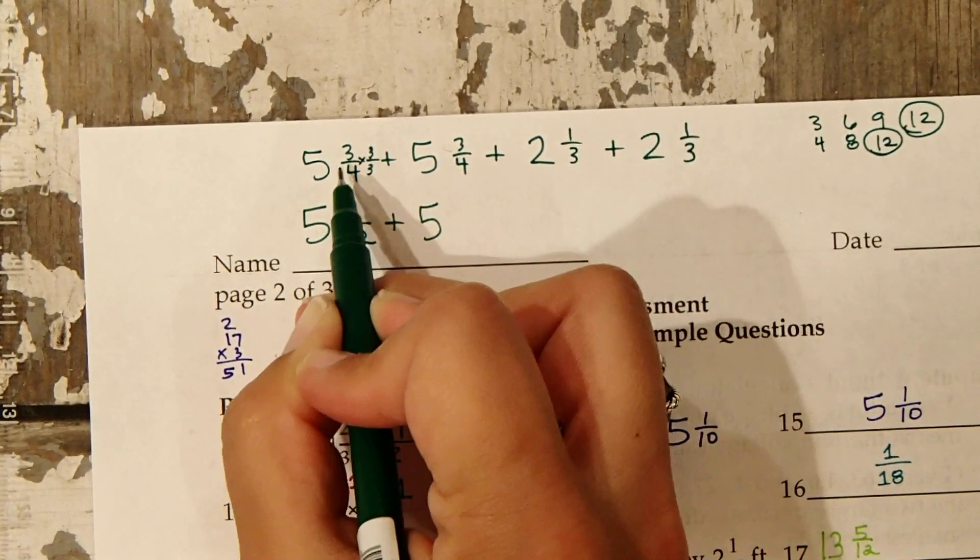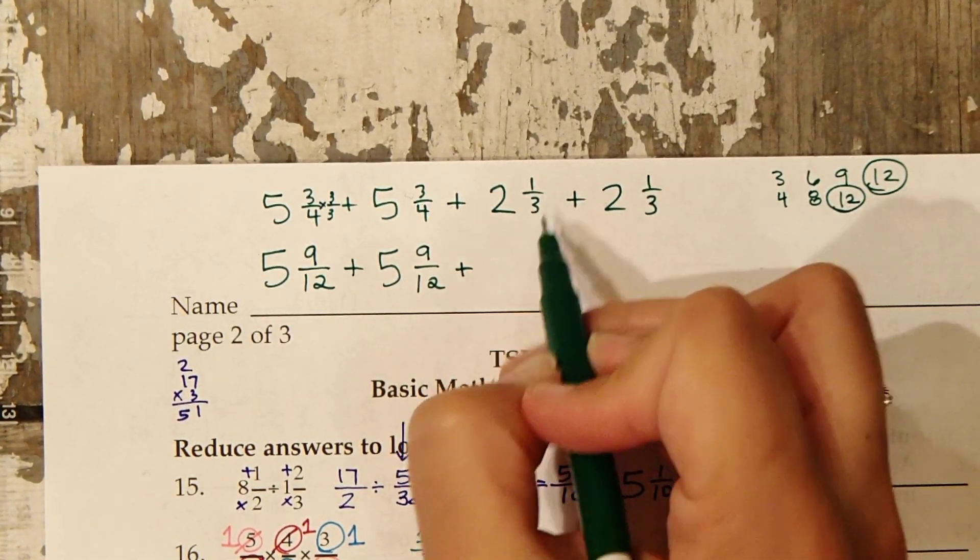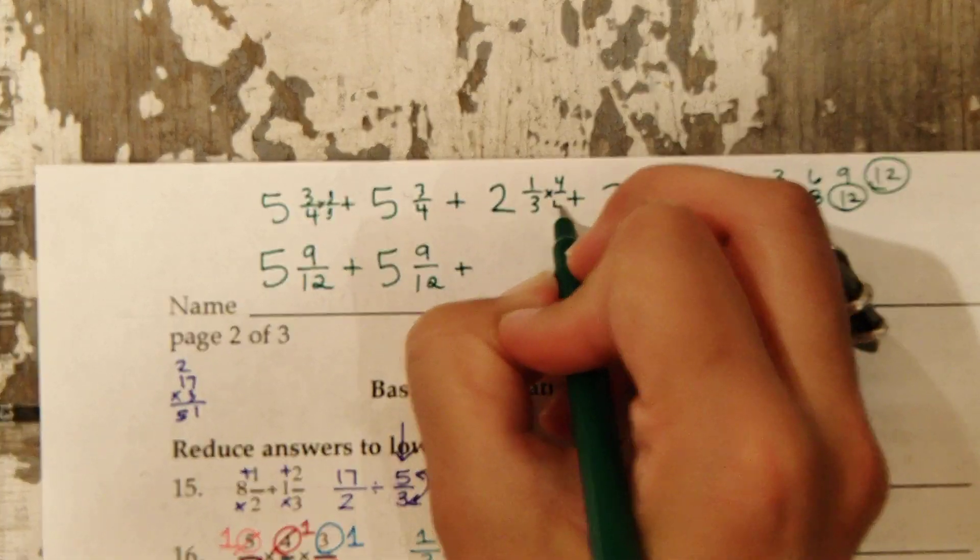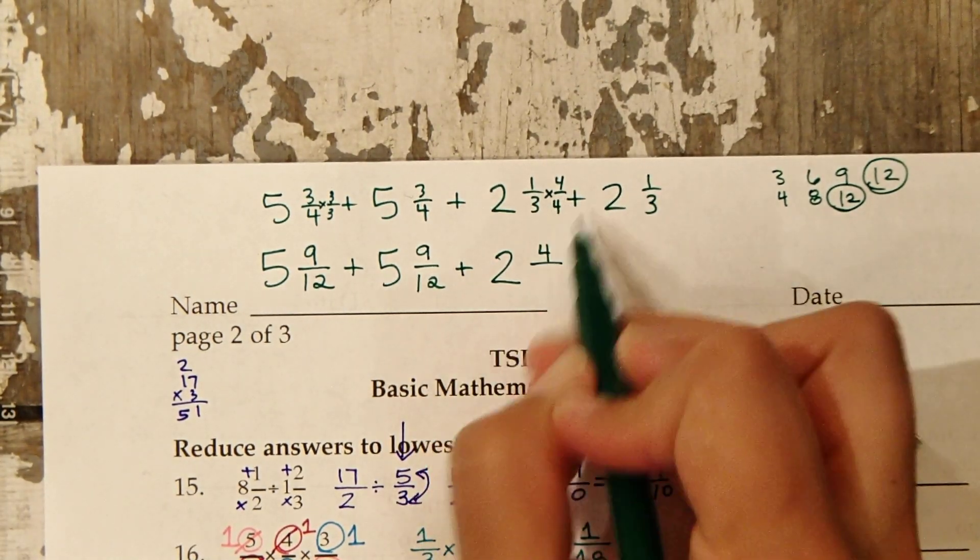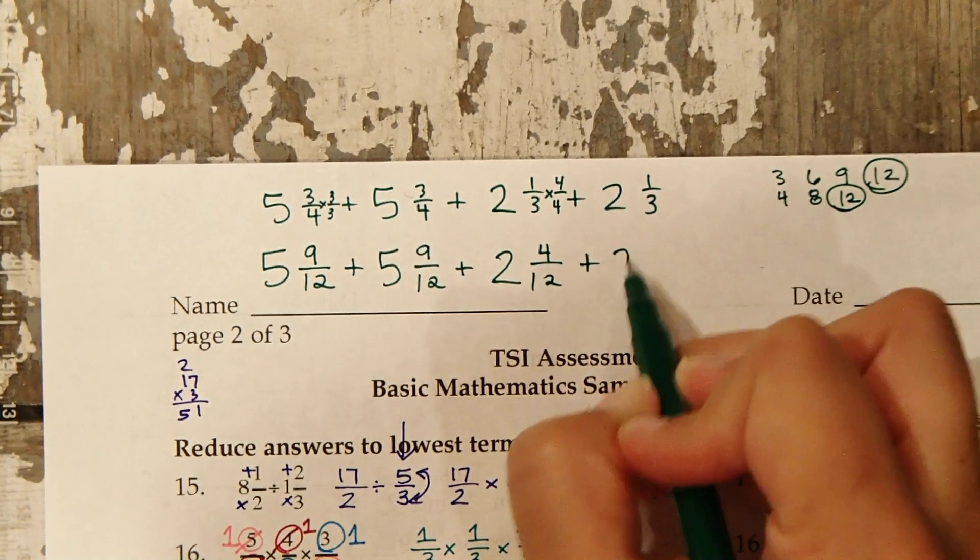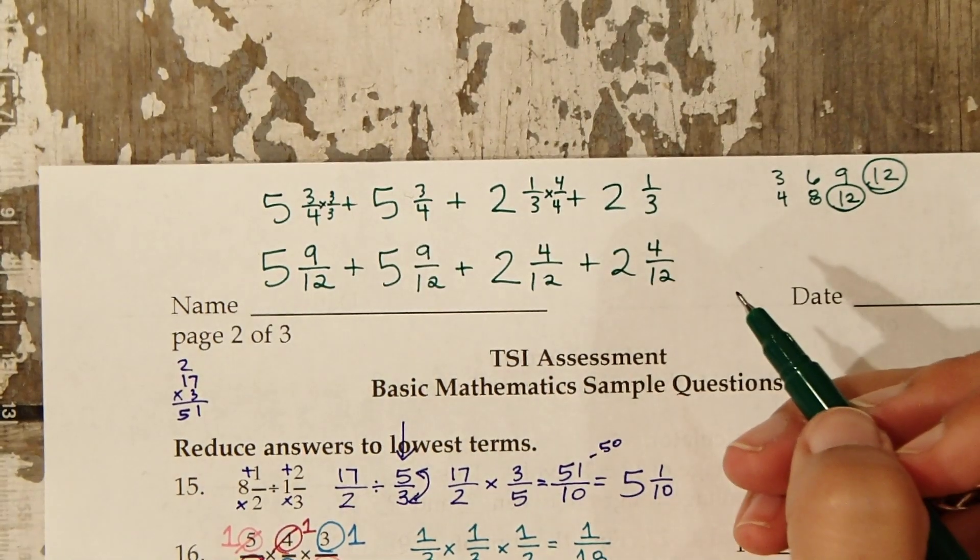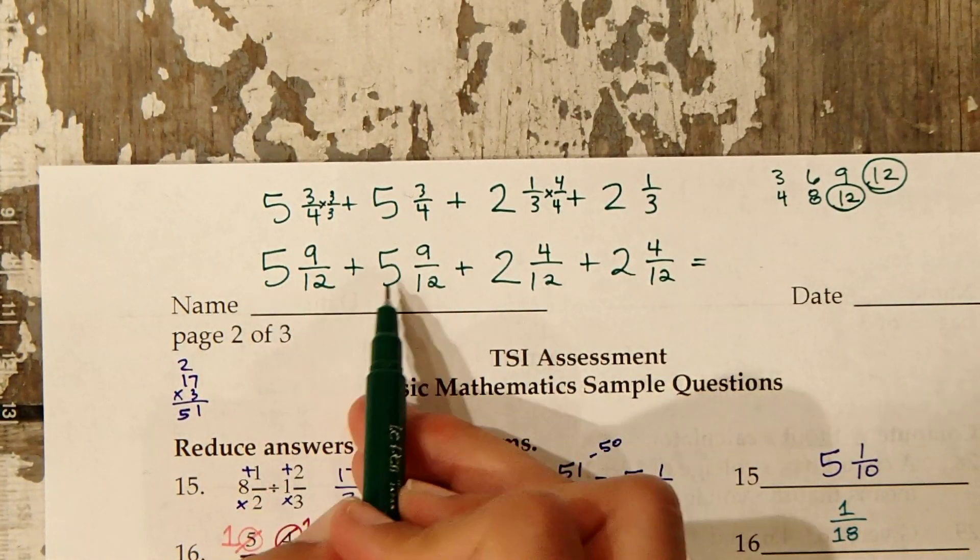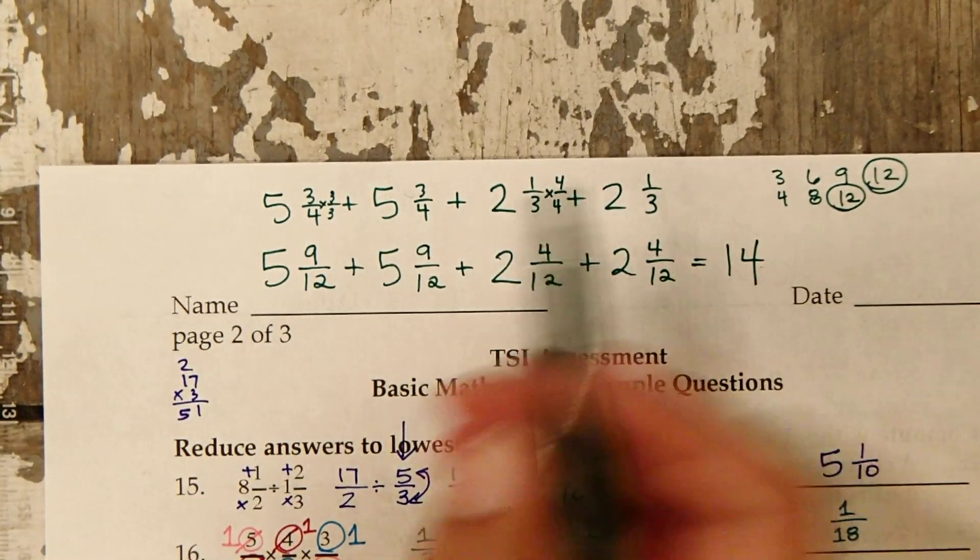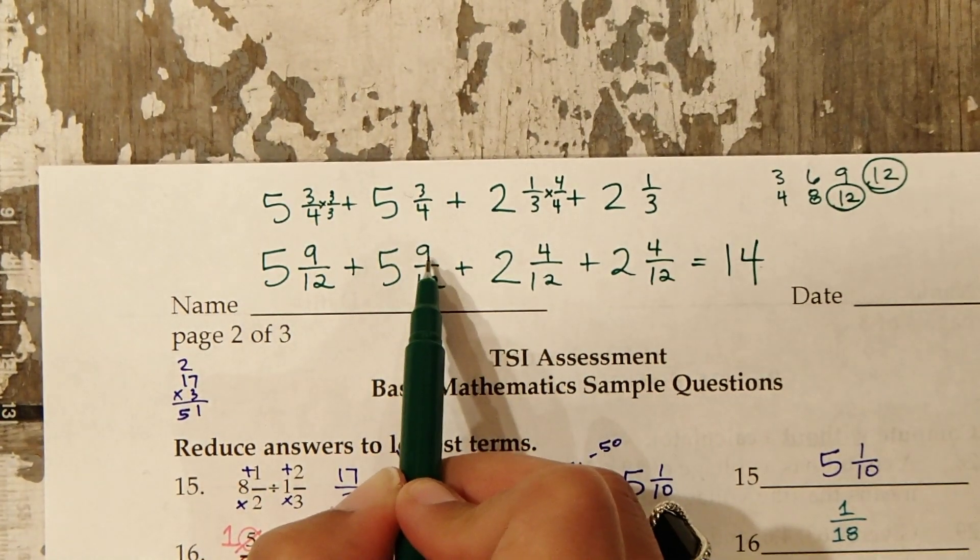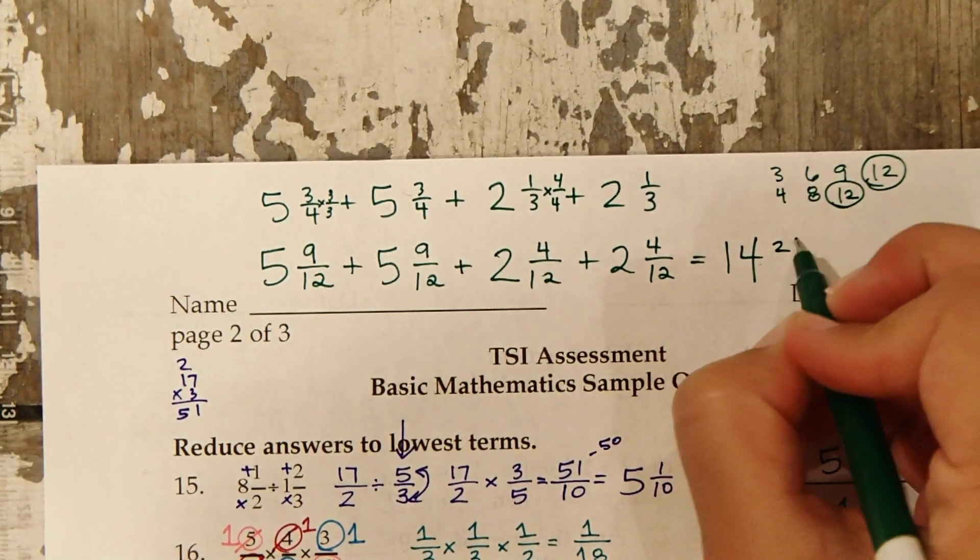To turn 3 4ths into 12ths, I need to multiply by 3 over 3. 3 times 3 is 9, also 9 12ths for the second one. To get 2 and 1 3rd into 12ths, multiply by 4 over 4. 1 times 4 is 4, 3 times 4 is 12, also 4 12ths for the last one. Now they're all the same denominator. 5 plus 5 is 10, 10 plus 2 is 12, 12 plus 2 is 14. 9 plus 9 is 18, 18 plus 4 is 22, 22 plus 4 is 26 12ths.